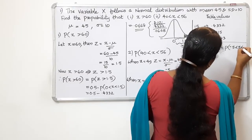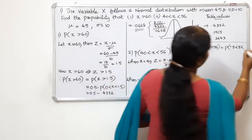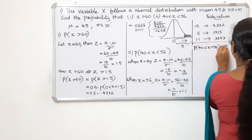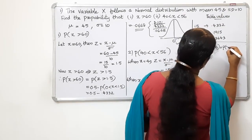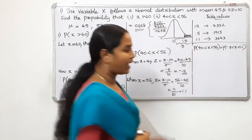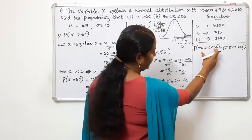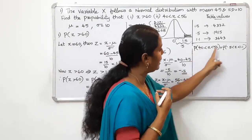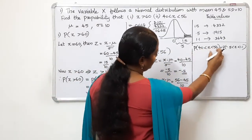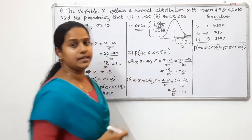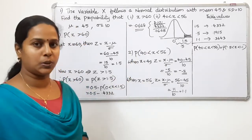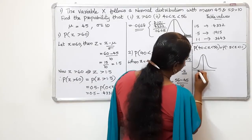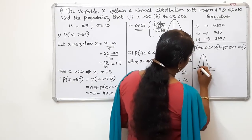So P of 40 less than x less than 56 becomes P of minus 0.5 less than Z less than 1.1. Looking at the diagram, this is the Z-axis with minus 0.5 on the left and 1.1 on the right. The shaded area is between these two values. The two sides of the distribution are different, so we handle them separately.